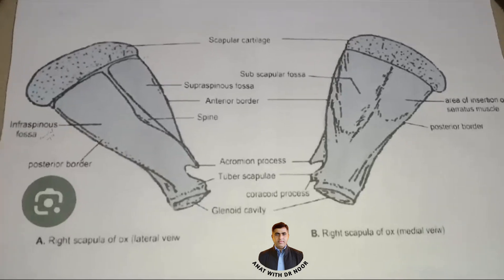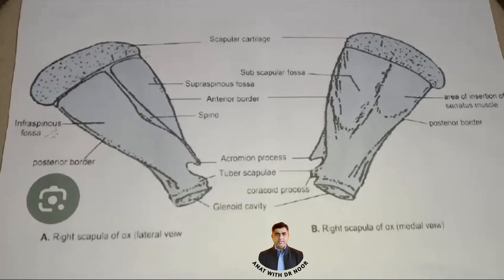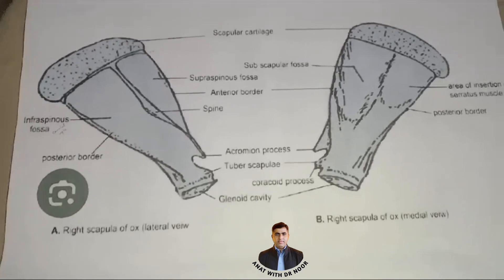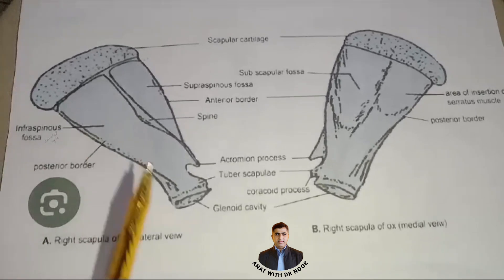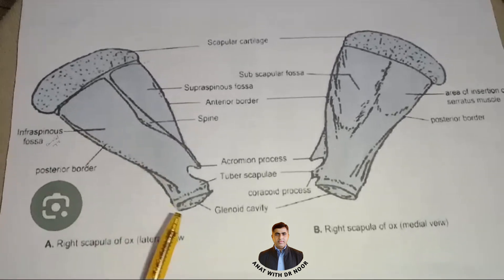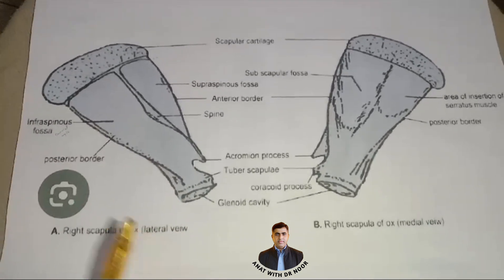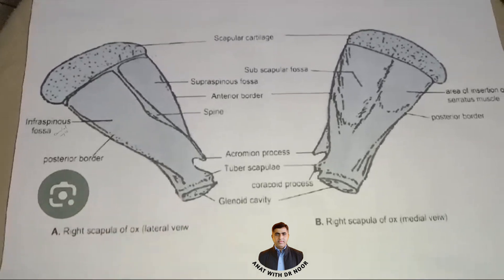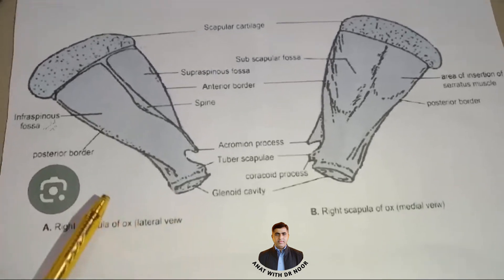Assalamualaikum everyone. Aaj hum discuss karengay Osteology mein ek bone, that is scapula. Scapula is a flat triangular bone that forms our pectoral girdle. Scapula mein hum iske borders, surfaces, angles, position, vagairah sab discuss karengay.